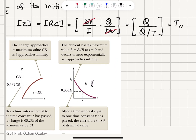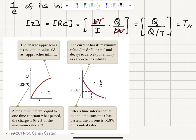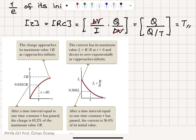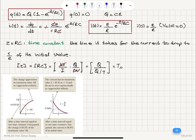Plotting these answers: the charge is initially zero and increases as time goes by. When τ equals RC, it approaches 0.632·Cε, and Cε is the asymptotic limit as t goes to infinity. The current, which is initially ε/R, drops exponentially — reaching 36.8% of its initial value at time t equals τ.